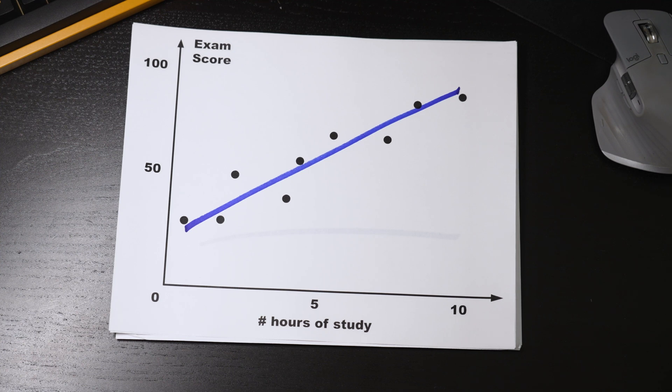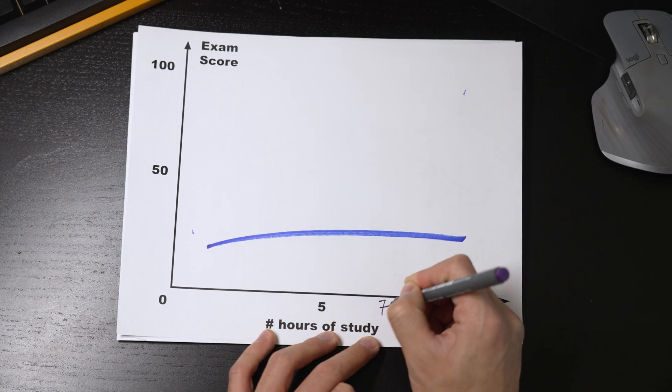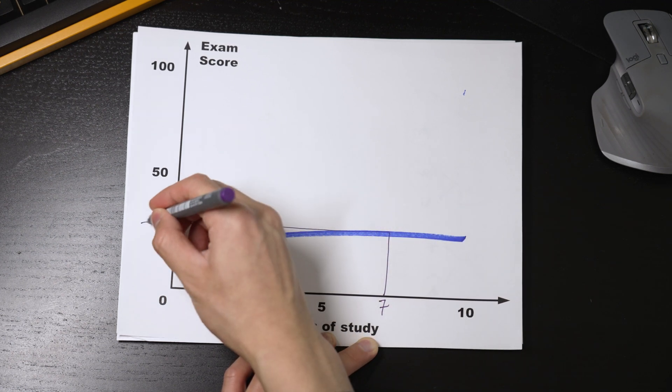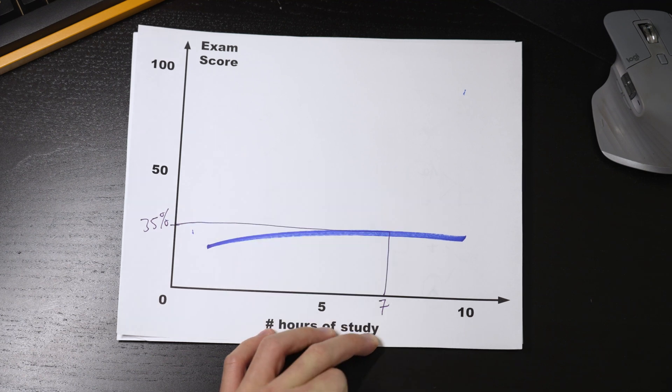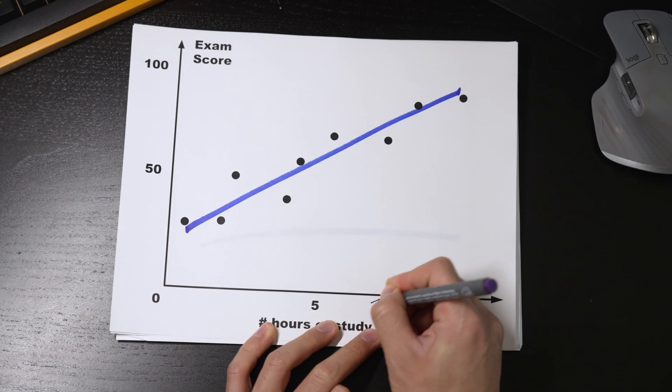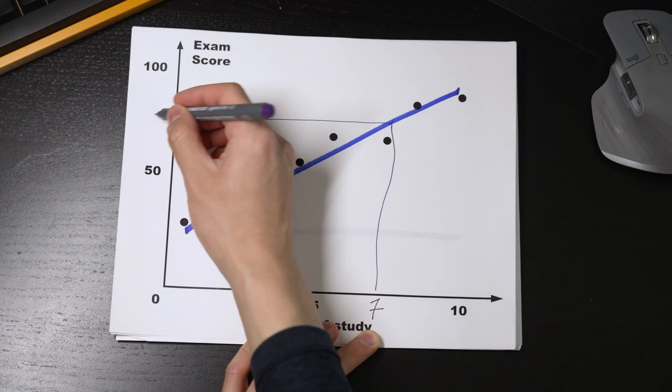We also talked about making predictions. So here's how the model makes these predictions. Let's use my model that didn't have any training data. If someone says they studied for seven hours, that model would predict they'd get a 35 on the exam. On the other hand, my other model would have predicted 75.